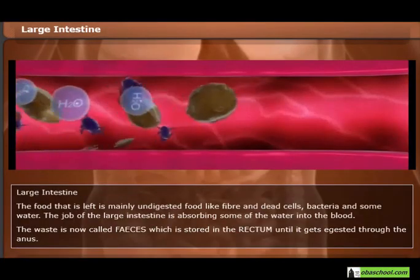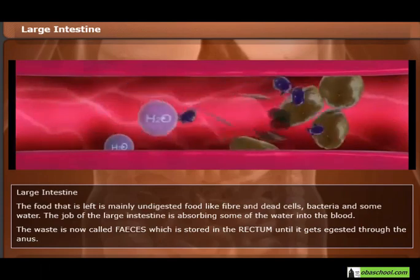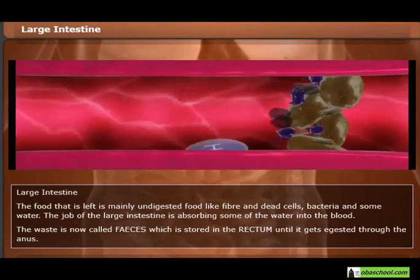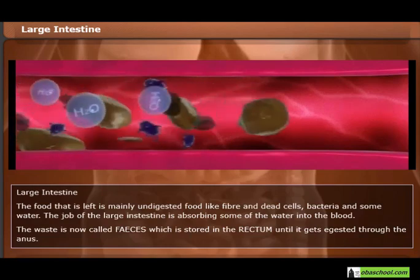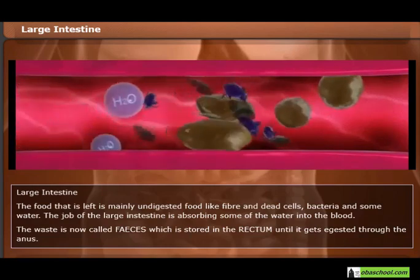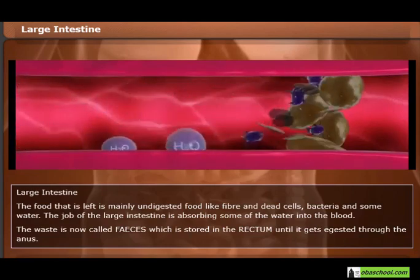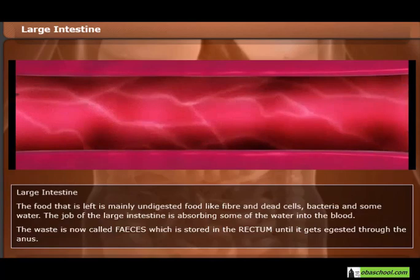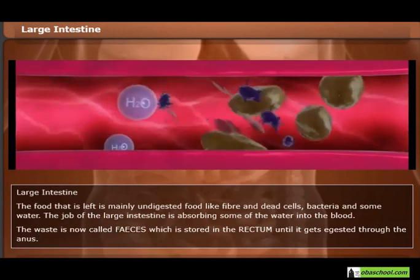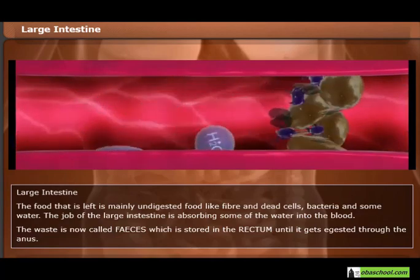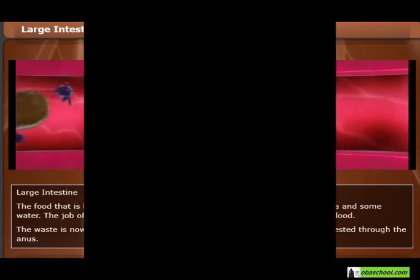The food that is left is mainly undigested material like fibre, dead cells, bacteria, and some water. The job of the large intestine is to absorb some of this water into the blood. The remaining waste is called faeces, which is stored in the rectum until it is expelled through the anus.